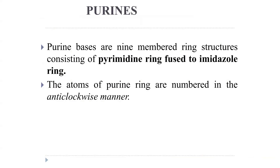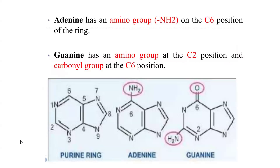Purine bases are nine-membered ring structures consisting of a pyrimidine ring fused to an imidazole ring. The atoms of the purine ring are numbered in the anticlockwise manner. Adenine has an amino group at the sixth position. Guanine has an amino group at carbon-2 and a carbonyl group at carbon-6.